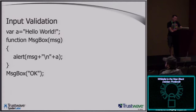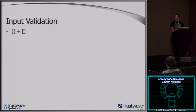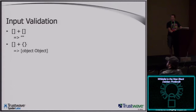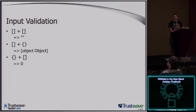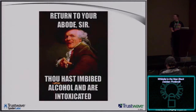The other problem is that programming languages don't do us any favors. So it's really easy for me as a bad guy to find ways around something. For example, JavaScript: array plus array gives you an empty string, not an array. Array plus object — you get an object. Object plus array — you'd get zero. Object plus object — not a number. Type of not a number? Number. Go home, JavaScript, you're drunk.